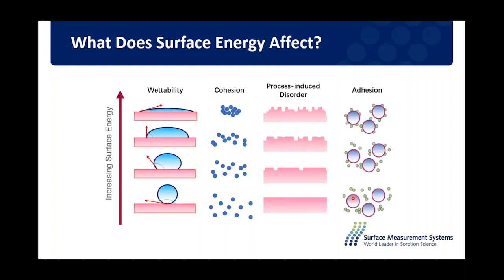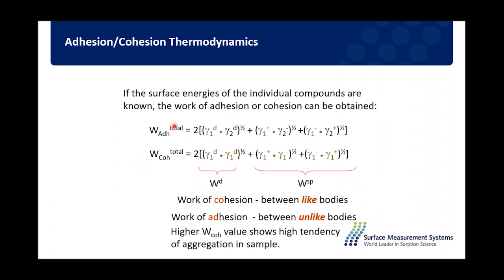For composites — whether different powders, fibers in a polymer, or a polymer with powders — how different materials interact with each other is controlled by the work of adhesion, which is defined by the surface energy of the materials. If I know the surface energy of different materials, I can predict their adhesive or cohesive properties based on the work of adhesion and cohesion. So surface energy can be used as a screening tool to measure properties of individual materials and then predict how they might interact.